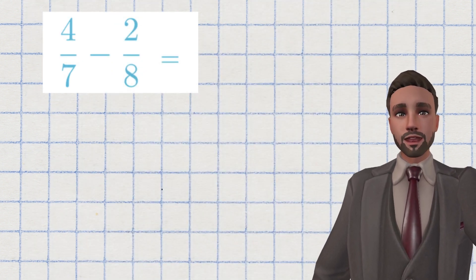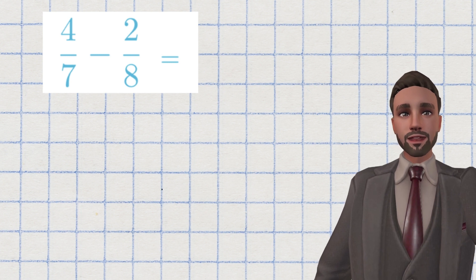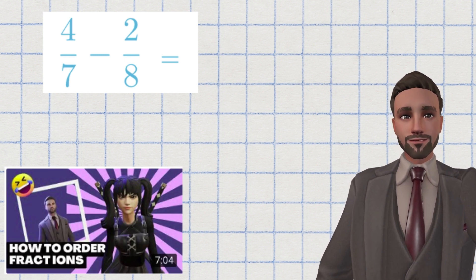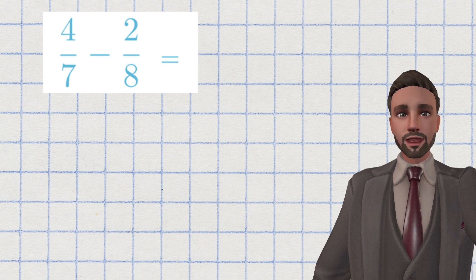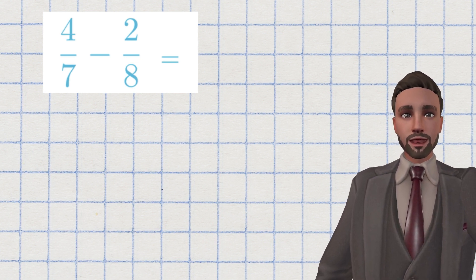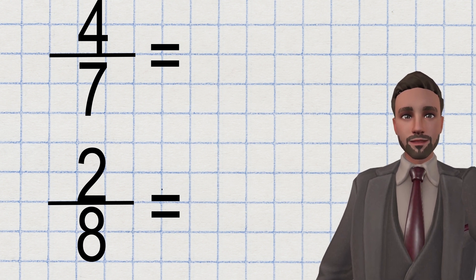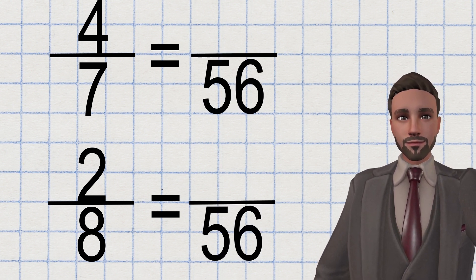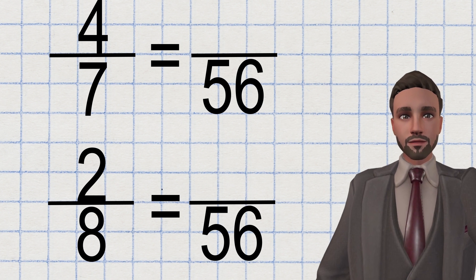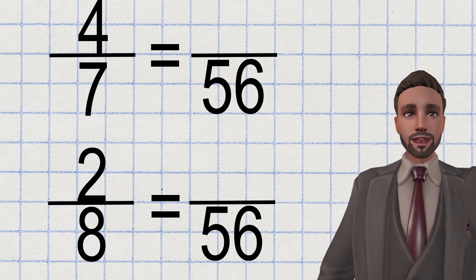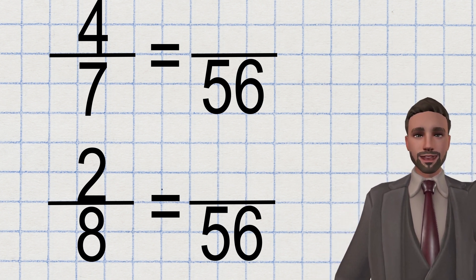If you need help with equivalent fractions, you can find a thorough explanation in this video below. For this video, though, I will quickly show you what I would do. I would write both fractions with an equal sign and over 56 like this. Then remembering whatever happens to the bottom happens to the top. And I would work out each fraction and their equivalents.